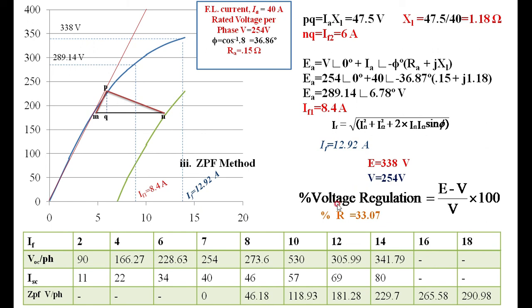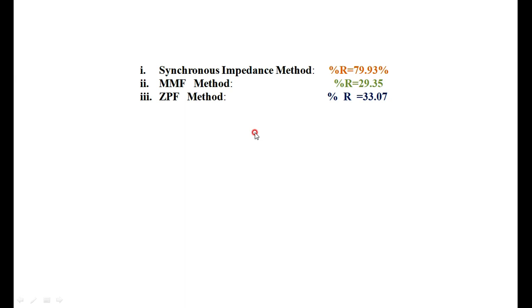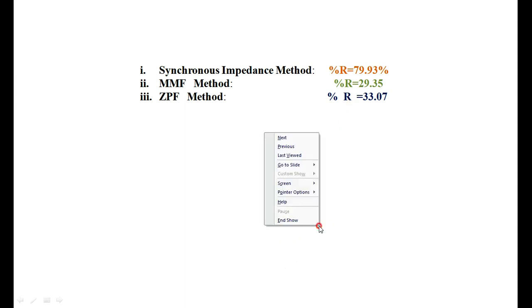In summary, the ZPF method gives the most accurate regulation of 33.07%. The EMF (synchronous impedance) method gives a higher value of 79.93%, which is more than the actual. The MMF method gives 29.35%, which is less than the actual value. The ZPF method is treated as the accurate method, while the synchronous impedance method overestimates and the MMF method underestimates the regulation.